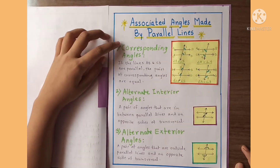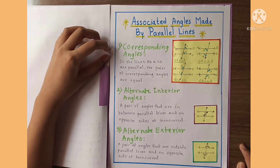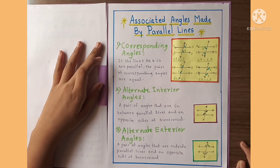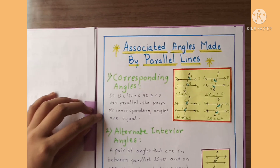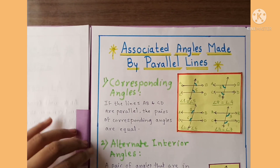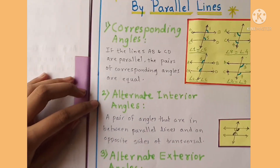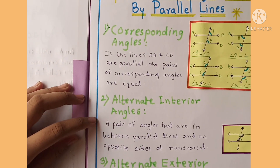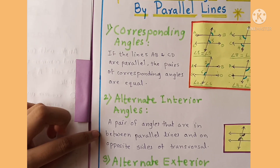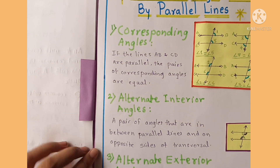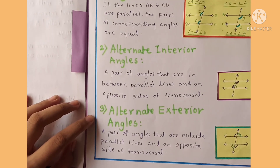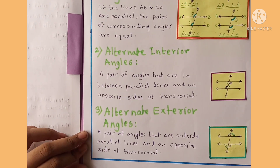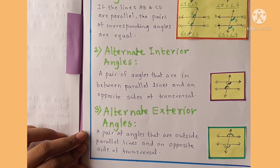Associated angles made by parallel lines. First, corresponding angles — if the lines AB and CD are parallel, the pairs of corresponding angles are equal. Second, alternate interior angles — a pair of angles that are in between the parallel lines and on opposite sides of the transversal. Third, alternate exterior angles — a pair of angles that are outside the parallel lines and on opposite sides of the transversal.